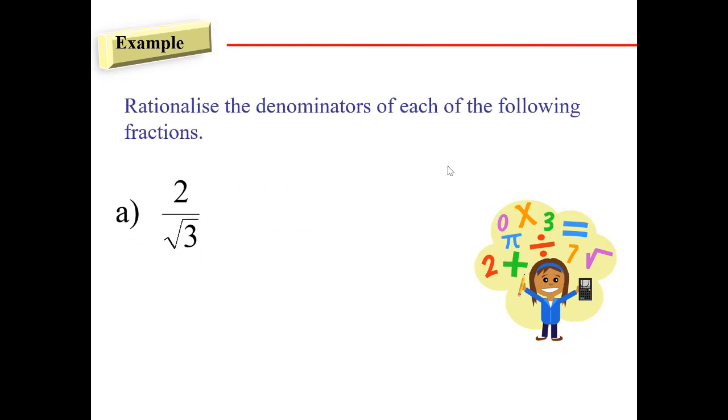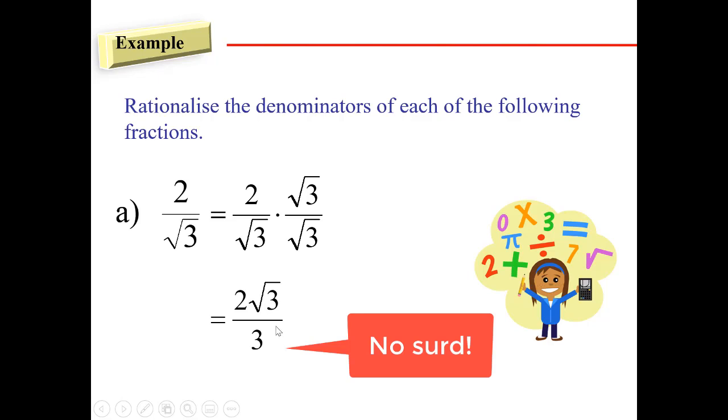So now we're going to look at this example. We're going to rationalize the denominator. So we have 2 over square root of 3. So how are we going to rationalize? We are going to multiply with square root of 3 as well. So we'll have, see the denominator will have no surd.